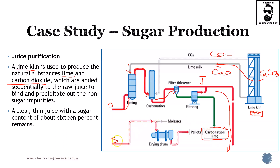Now focusing on the solids: we have the solid beet slices, and we're going to add molasses. Molasses are materials that are not technically sugars yet but work like sugar — they are very black and viscous, commonly seen in barbecue sauce, and are a very sugary product. The solid beet pieces mix with the molasses, go to a drying drum, and are formed into pellets.